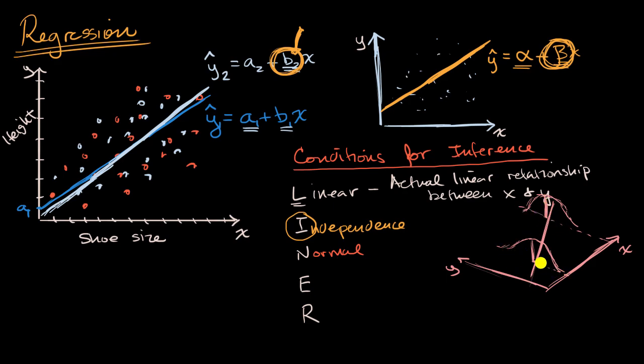So for given x, the distribution of y's should be normal. Once again, many times you'll just be told to assume that that has been met because it might, at least in an introductory statistics class, be a little bit hard to figure this out on your own.